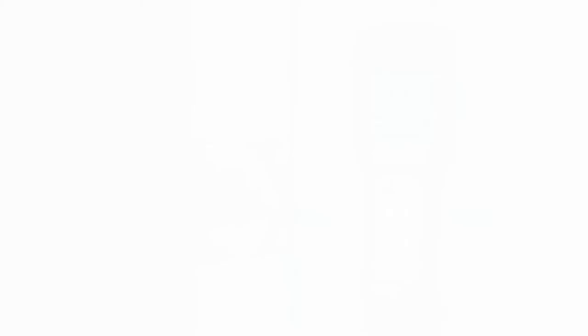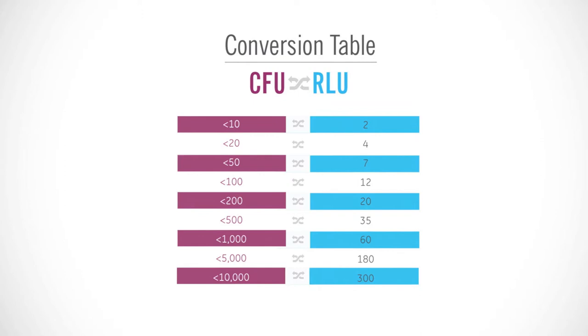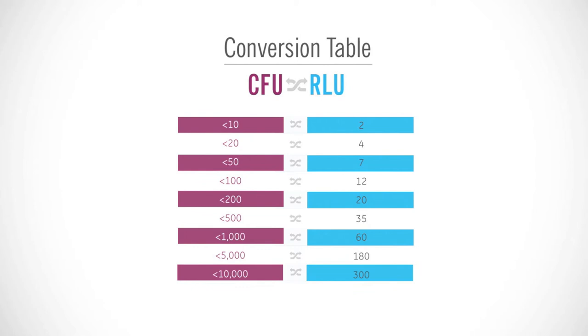For enumeration or quantitative measurement, refer to the table in the MicroSnap kit insert to determine the equivalent CFU levels detected by MicroSnap. If a positive result is found using the MicroSnap coliform test, then the convention would be to confirm the presence or absence of E. coli in the test sample using a MicroSnap E. coli detection device.